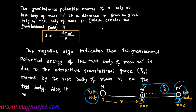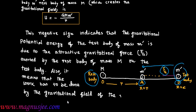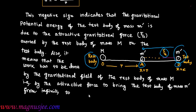So it means that the work has to be done by the gravitational field created by the raised body of mass capital M around it — that is, by the attractive force of gravitation — to bring the test body of mass M' from infinity (point D) to point A.